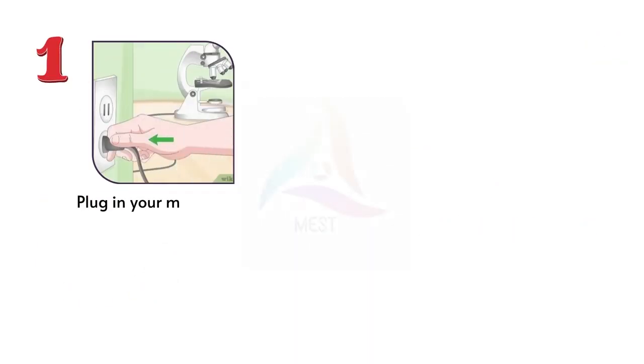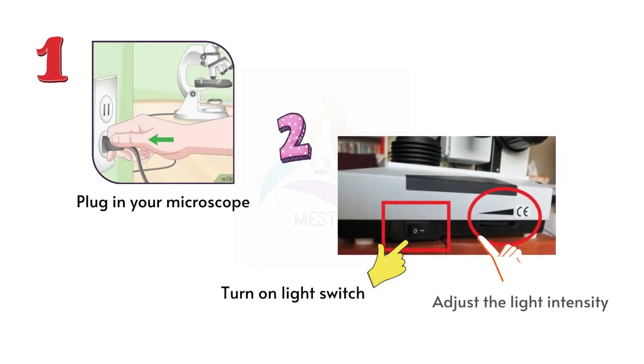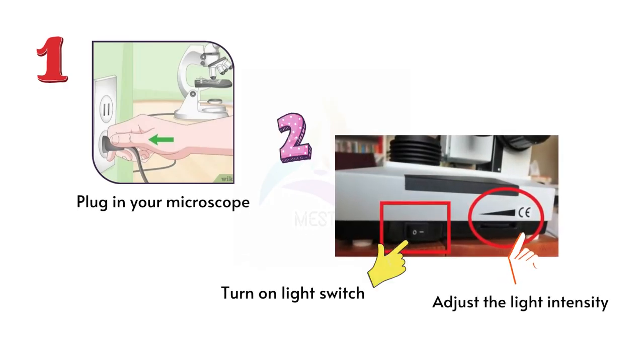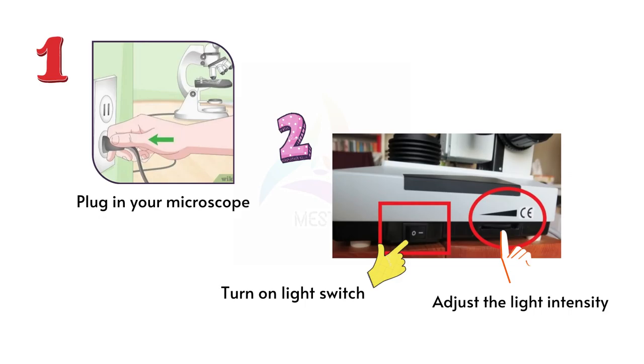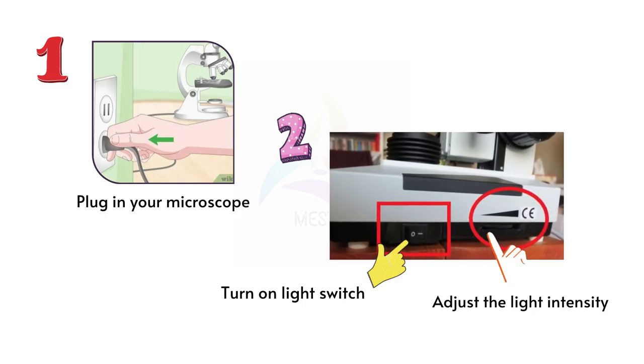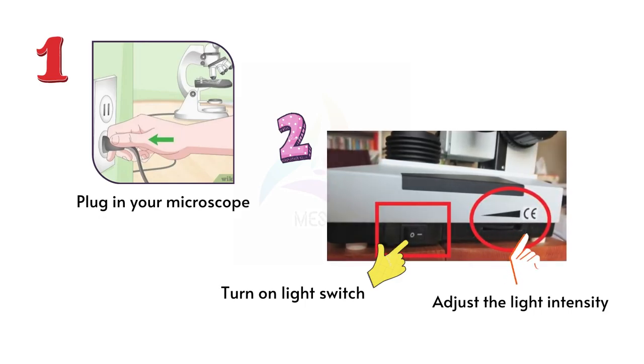When you use a microscope, at first you have to plug in the microscope and turn on the light switch, and adjust the light intensity as much as you want.